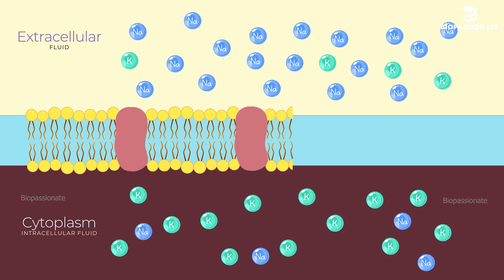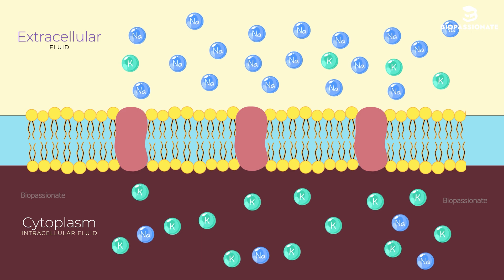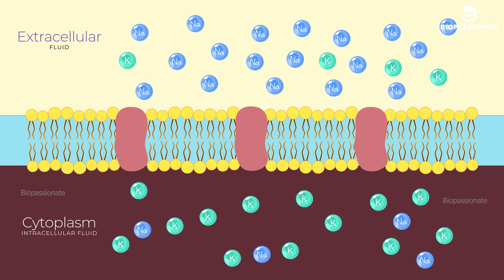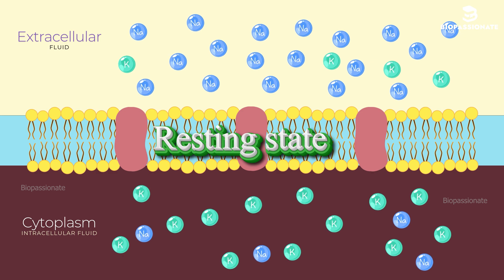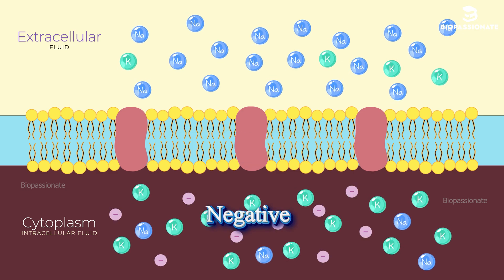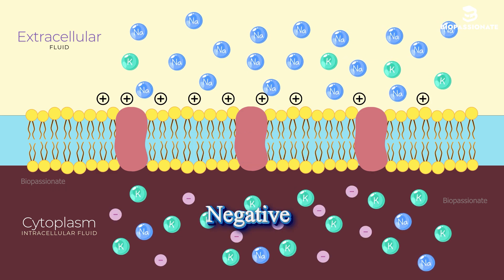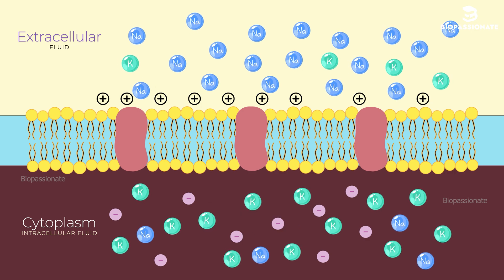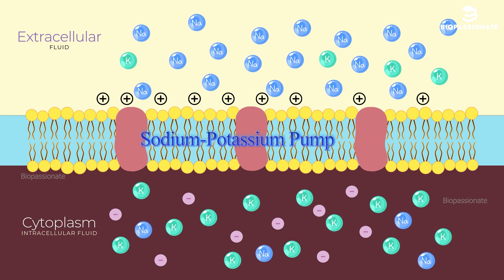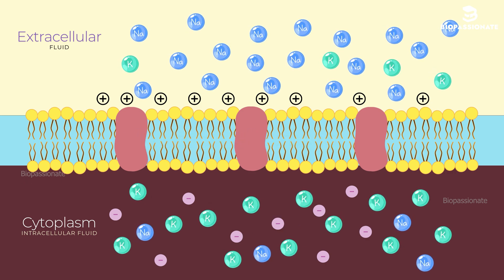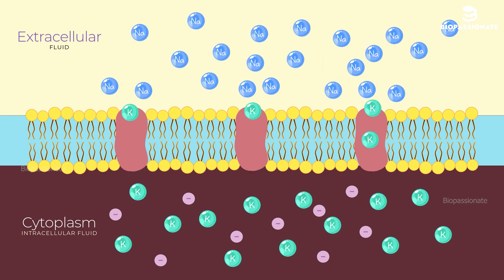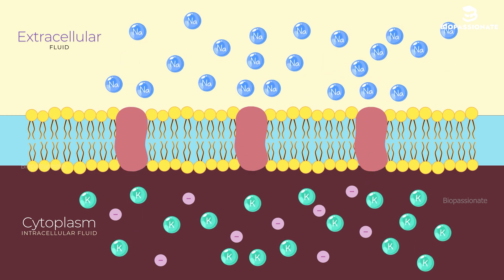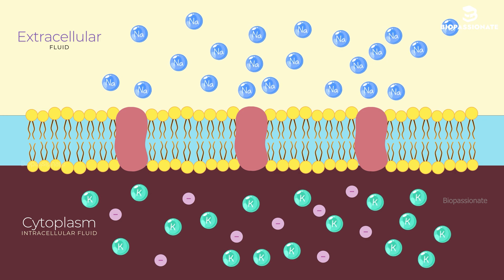Now, the magic of nerve impulse transmission happens along the axon. Before an impulse is generated, the neuron is in a resting state. This means the inside of the neuron is more negatively charged compared to the outside. This is called the resting potential. The resting potential is maintained by the sodium-potassium pump. This pump pushes sodium ions out of the cell and pulls potassium ions in, keeping the inside negatively charged.